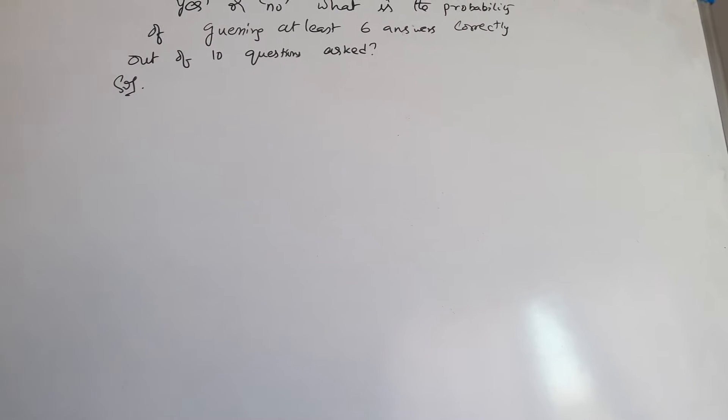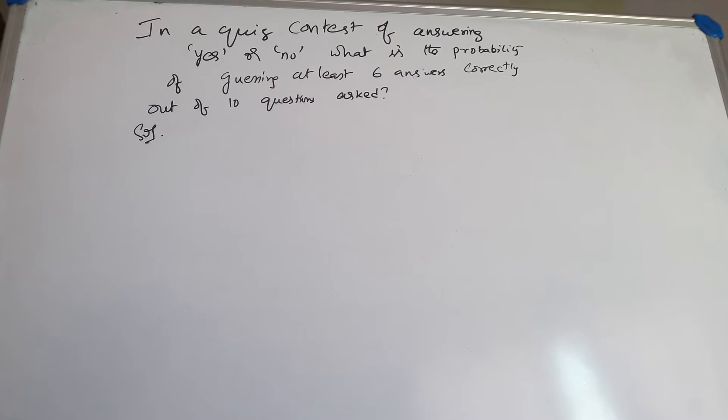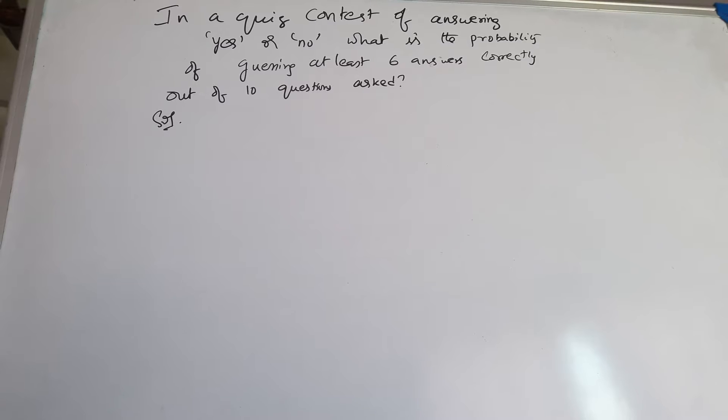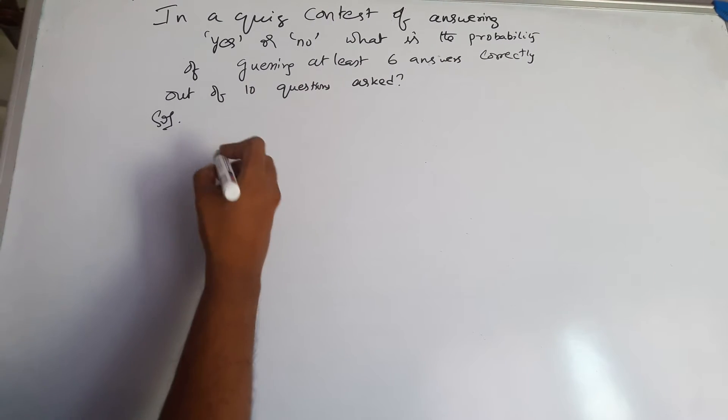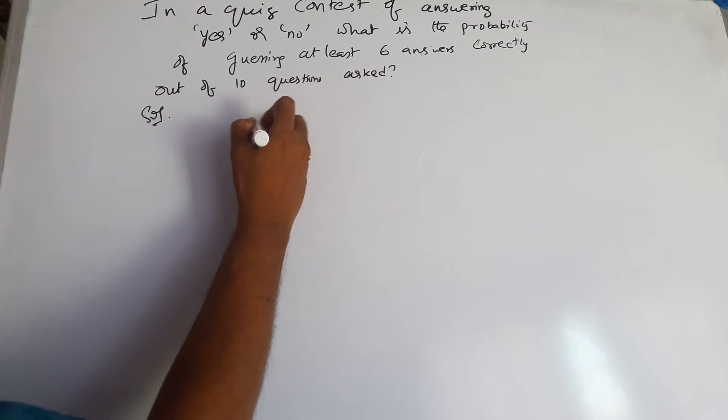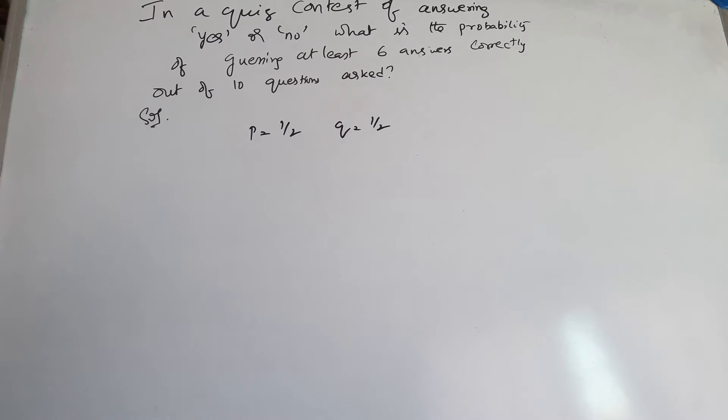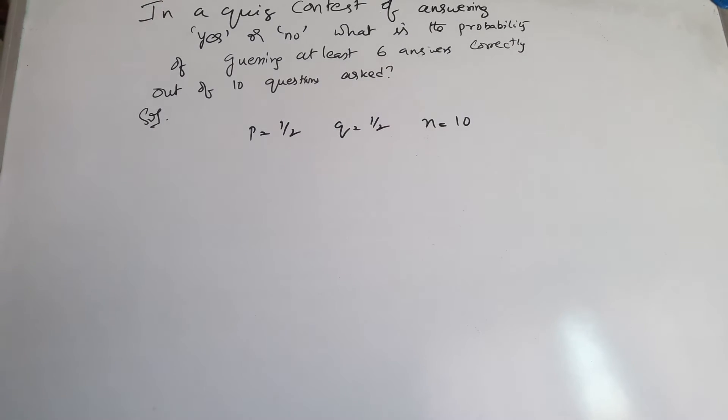In a quiz contest of answering yes or no, what is the probability of guessing at least 6 answers correctly out of 10 questions asked? We have P equals one-half, then Q equals one by two. The total number of questions asked is n equals 10.